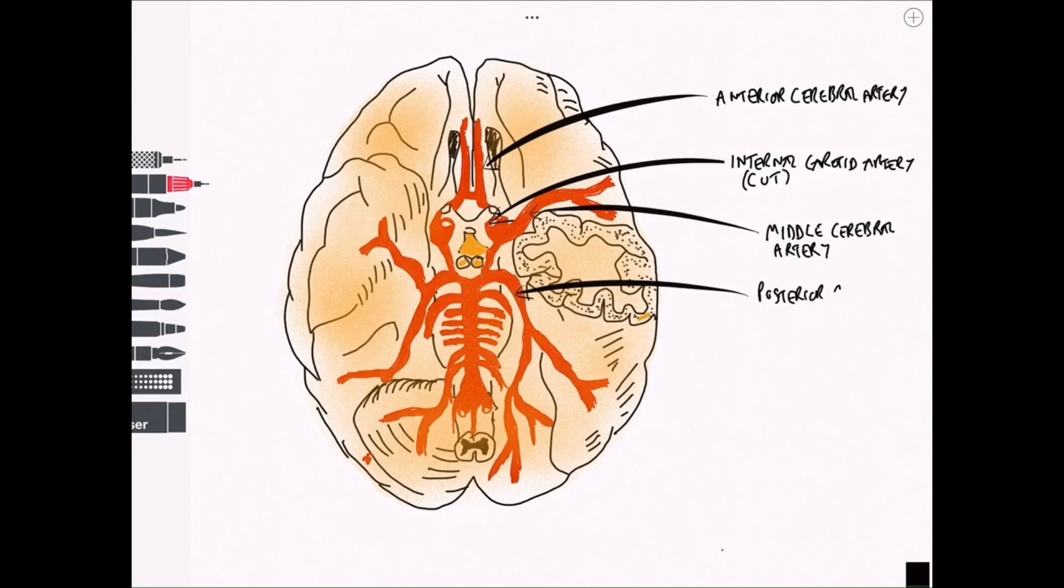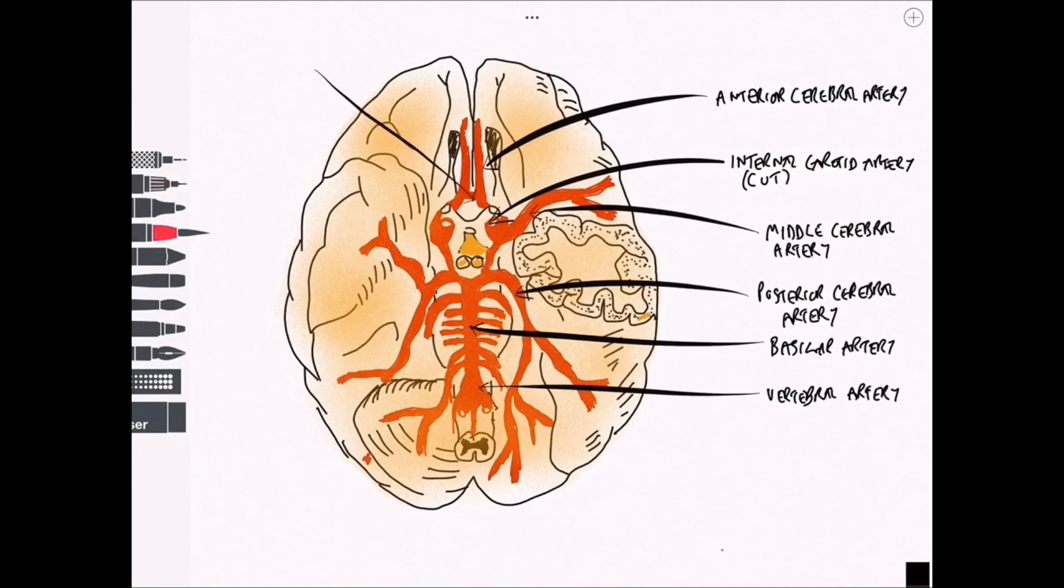Now we've got the posterior cerebral artery going to the posterior part of the brain, particularly the occipital lobe, and we can show the basilar artery here which is the joining of the two vertebral arteries coming from the subclavian. We can see the vertebral artery coming on now. So the two vertebral arteries form the basilar on the front of the pons.